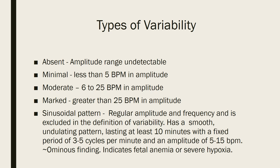Minimal variability is less than five beats per minute of amplitude above or below the baseline. That's why it's really key to determine a baseline first, and then we'll figure out what type of variability they're having. Babies can go through periods of minimal variability during sleep cycles. Moderate variability is six to 25 beats per minute above or below the baseline — that's our gold standard, where we want them to be. That means our baby is well oxygenated, happy, and tolerating labor.